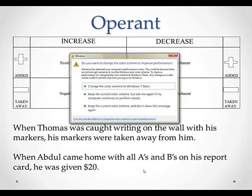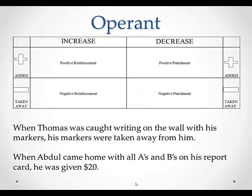Okay, so now we're on to operant conditioning. Here's the chart I gave you in class. When Thomas was caught writing on the wall with his markers, his markers were taken away from him. And when Abdul came home with all A's and B's on his report card, he was given $20. Ask yourself: what is the behavior and what is the consequence? Is the behavior going to increase or decrease? And is something being added or taken away? When Thomas was caught writing on the wall, this is negative punishment because his markers were taken away — something is taken away — and he's going to decrease the behavior of writing on the wall. Abdul is positive reinforcement because he was given something — he was given $20 — and he's going to continue to get A's and B's.